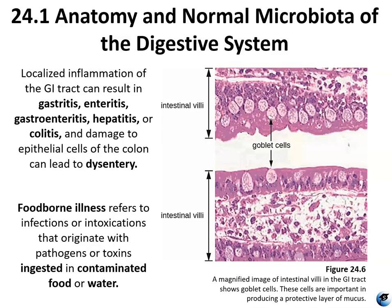Localized inflammation of the GI tract includes gastritis, enteritis, gastroenteritis, hepatitis, and colitis. Damage to the epithelial cells of the colon, the goblet cells, or the villi can lead to dysentery. Foodborne illness is commonly associated with this inflammation and involves infections that originate with ingested food or contaminated water.